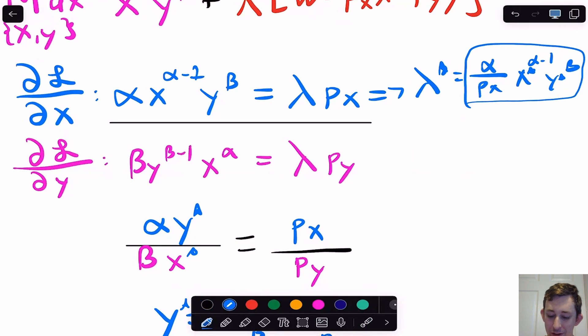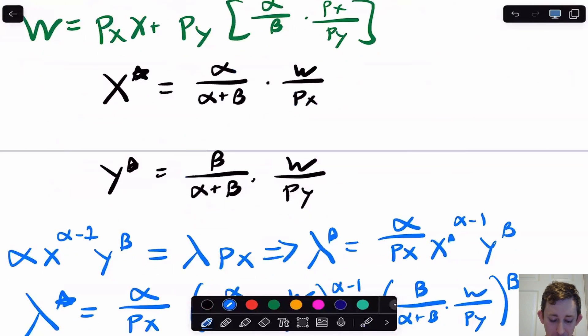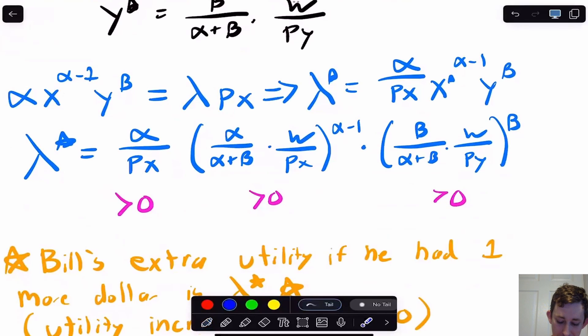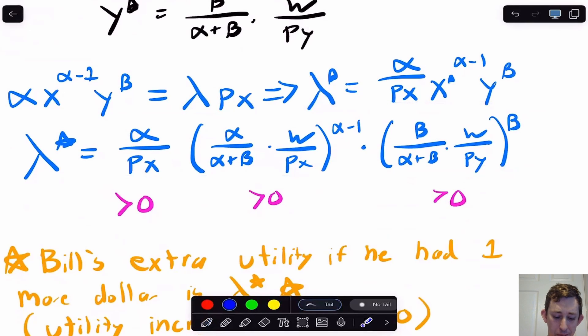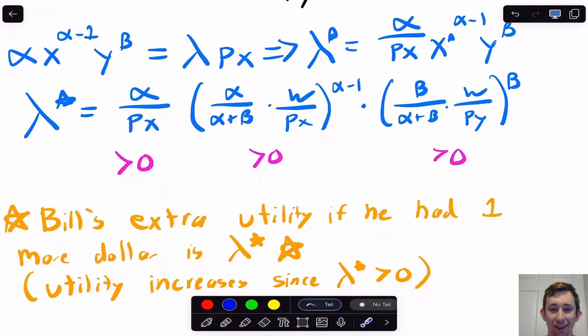If I plug my x star and my y star into that lambda, I'm going to get this gigantic expression right here. I'm not going to try to simplify this anymore, because all I'm trying to show is this is positive. The reason this is positive makes a lot of intuitive sense, because if you give Bill an extra dollar, his utility should go up if he's spending all this money, because Bill generally likes more stuff. With more dollars, he can buy more stuff, and with more stuff, Bill's utility goes up. Bill's utility is going up when his constraint gets relaxed a little bit, his lambda star should be positive. That's sort of the vague hand wavy definition that you might see in class or in a lecture in a textbook.